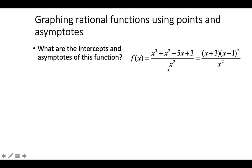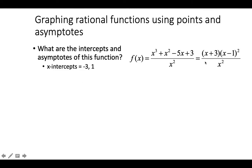Now a comprehensive example. Given a rational function, we first factor it to identify all key features: horizontal and vertical asymptotes, x-intercepts, y-intercept, etc. To factor, find the real zeros by testing factors of the constant term, then write the factored form. Other simplification methods are also acceptable.